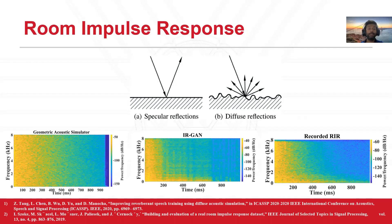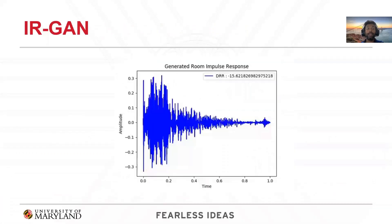We propose a complementary GAN-based room impulse response generator that is trained on real-world room impulse responses. The energy distribution of the room impulse response generated using our IRGAN is more closely matched to the real-world room impulse response when compared to the existing acoustic simulators. Our IRGAN can parametrically control acoustic parameters learned from real room impulse responses and generate synthetic room impulse responses that can imitate different real-world environments.